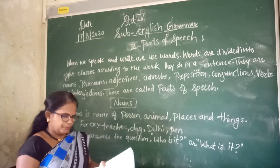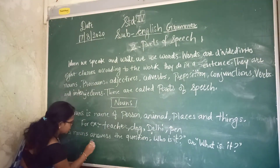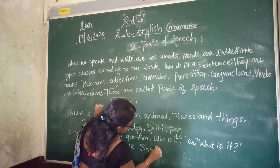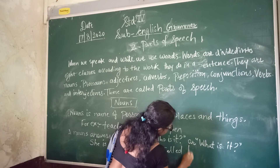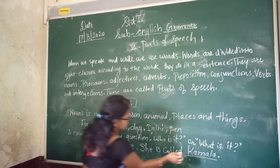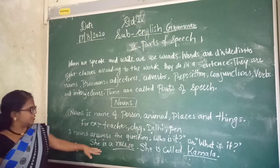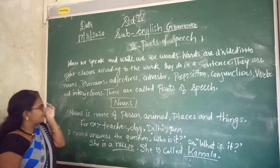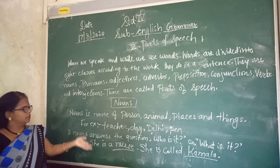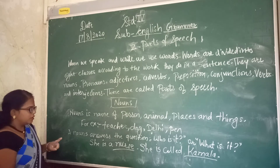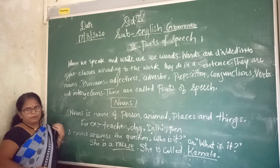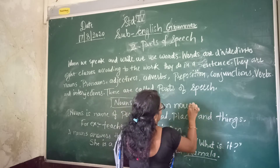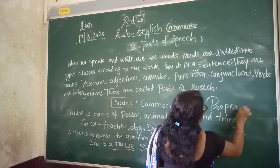For example, take the word 'nurse' — she is a nurse. Nurse is a noun. Now, she is called Kamla. Kamla is also a noun. But how can nurse also be a noun and Kamla also be a noun? They are distinguished as common noun and proper noun — so there are two types of nouns.